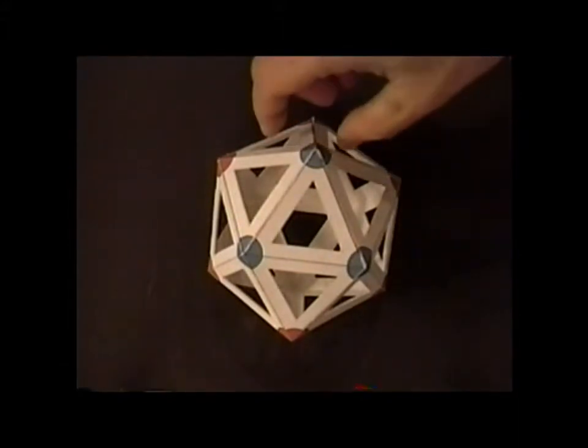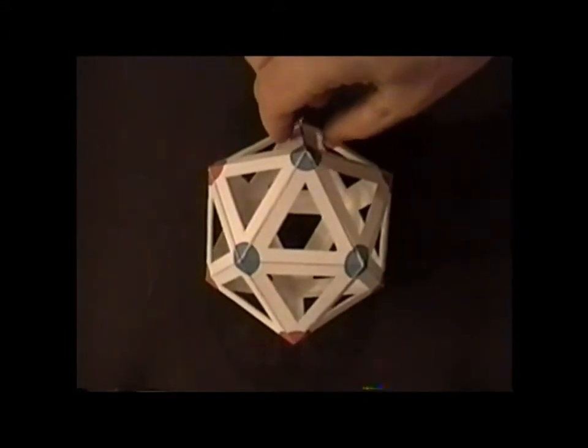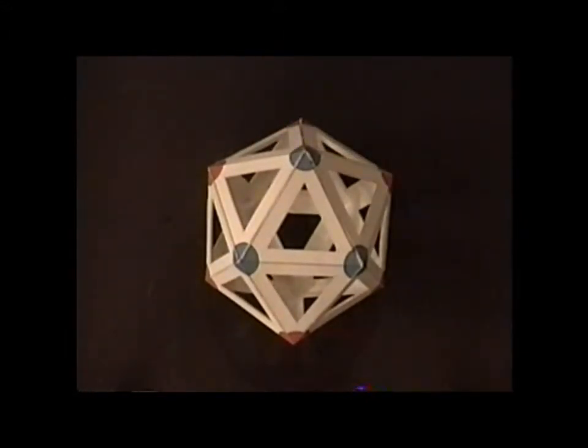Here we have an example starting with the icosahedral group, and we have been able to reduce the symmetry down to D3D. It shows that D3D is a subgroup of IH.